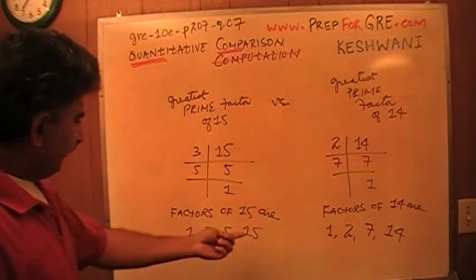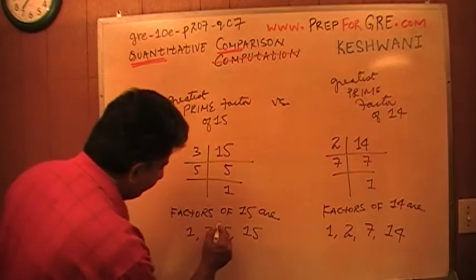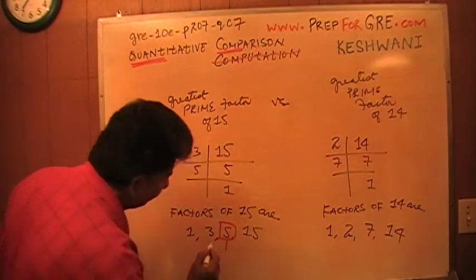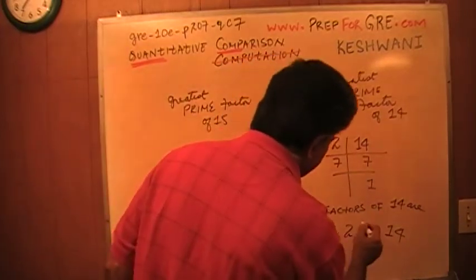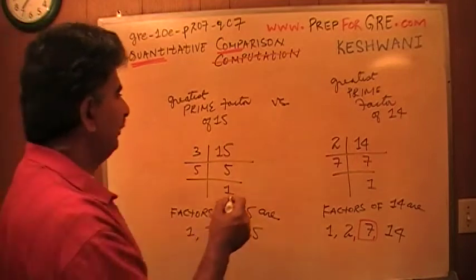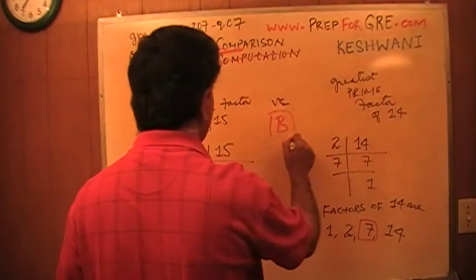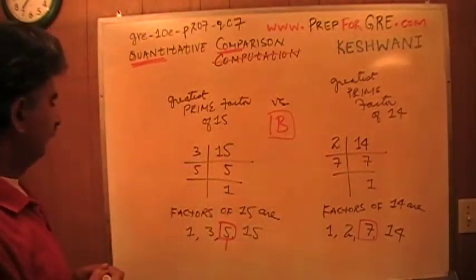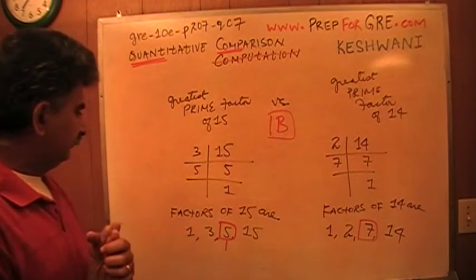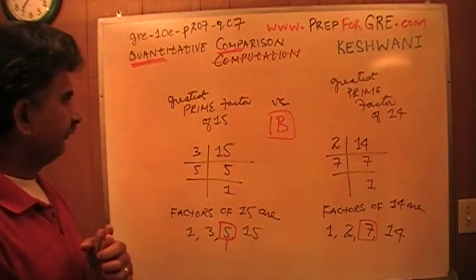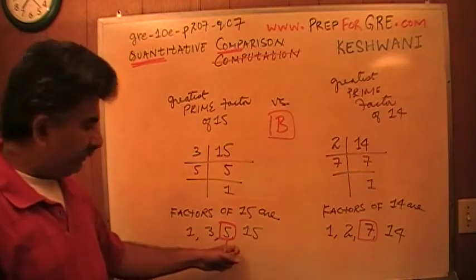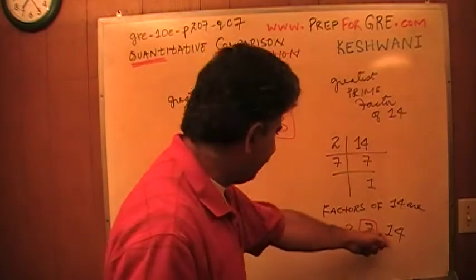Alright, the biggest prime number out of the factors of 15 is 5 — that is the greatest prime factor. And here, for 14, the biggest prime factor is 7. Therefore the answer is B. That's all, we are done. The answer is B because 7 is the biggest prime number among the factors of 14, and 5 is the biggest prime number among the factors of 15.